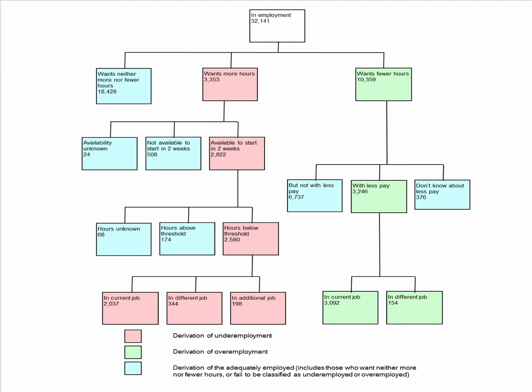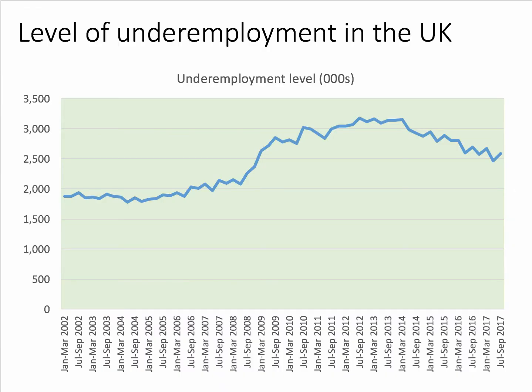Just over two million people have a job but want to work more hours — and this is the estimated level of underemployment. Essentially, underemployment is when people's jobs don't use all their skills, education, or ability to work — they're not being fully utilised in the labour market. The rise of zero hours contracts and part-time work is all part of this discussion.